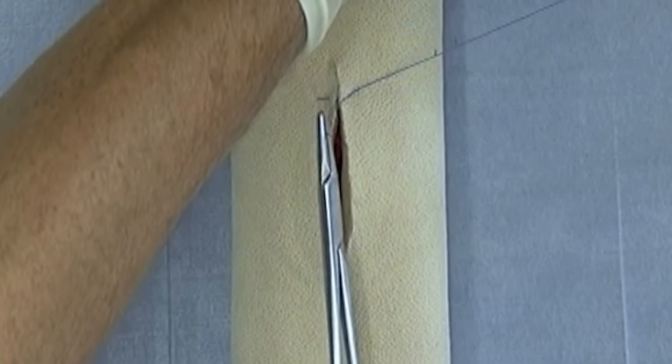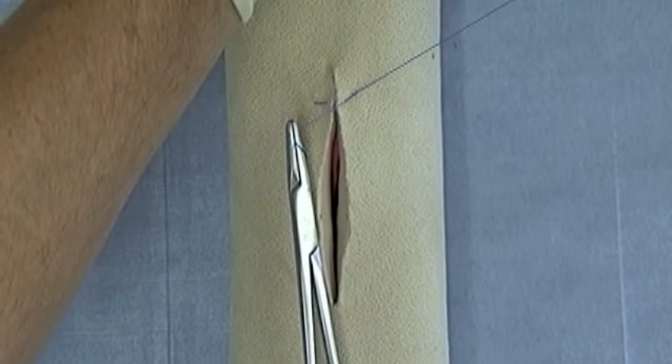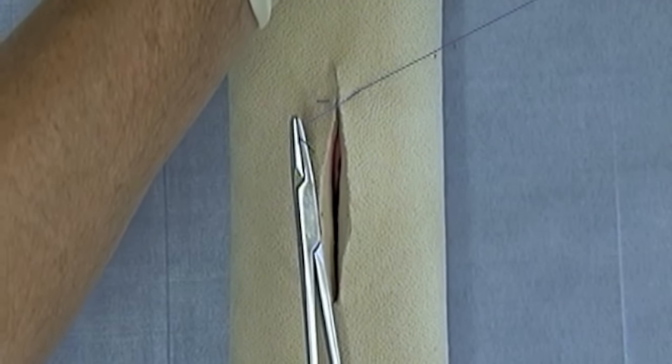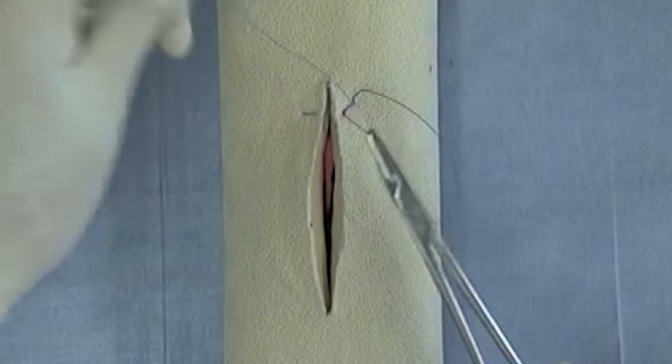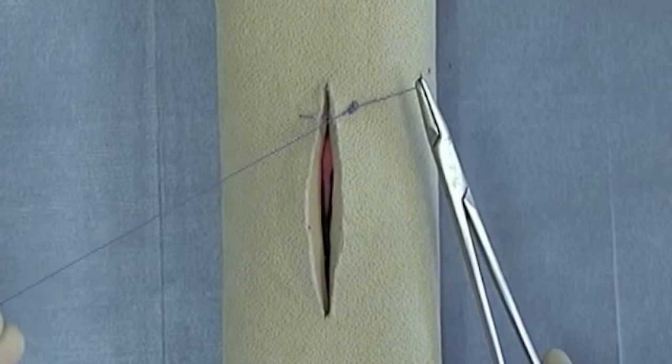Now it's hard to maintain the correct tension, but both the vertical mattress and the horizontal mattress are everting suture patterns, principally used for skin, principally used in areas where there's tension.